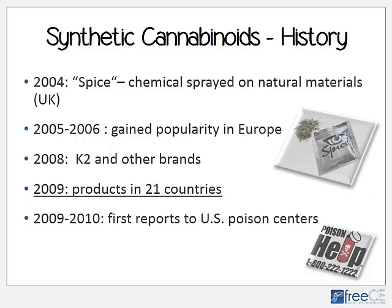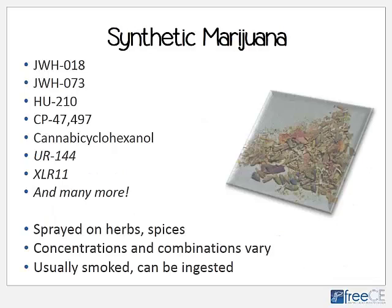In 2004, Spice was the first product we're aware of that was being sold with these chemicals to be abused. This product was sold in the United Kingdom — basically a natural leafy material where the psychoactive chemicals were sprayed on that material. Between 2005 and 2006, Spice gained a lot of popularity in Europe. In 2008, other brands such as K2 were put on the market. By 2009, these products were being sold in at least 21 countries. In 2009 to 2010, we first started hearing about reports of usage in the United States, and the first reports of toxicity were being called into poison centers.